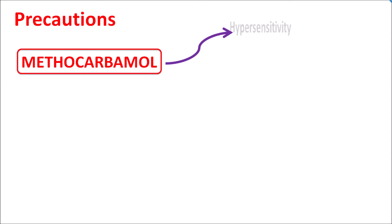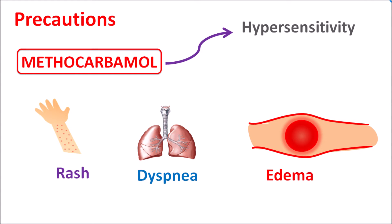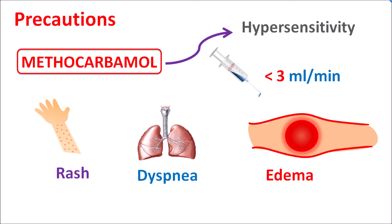Another important precaution is hypersensitivity. Methocarbamol can produce hypersensitivity reactions resulting in skin rashes, eczema, and dermatitis. It can also produce dyspnea — difficulty in breathing — peripheral edema, and particularly when given by IV route, it can produce thrombophlebitis, resulting in swelling at the site of injection. That's why when this drug is given by IV or IM route, the rate of injection should be less than 3 ml per minute to reduce any hypersensitivity reactions at the site of injection.